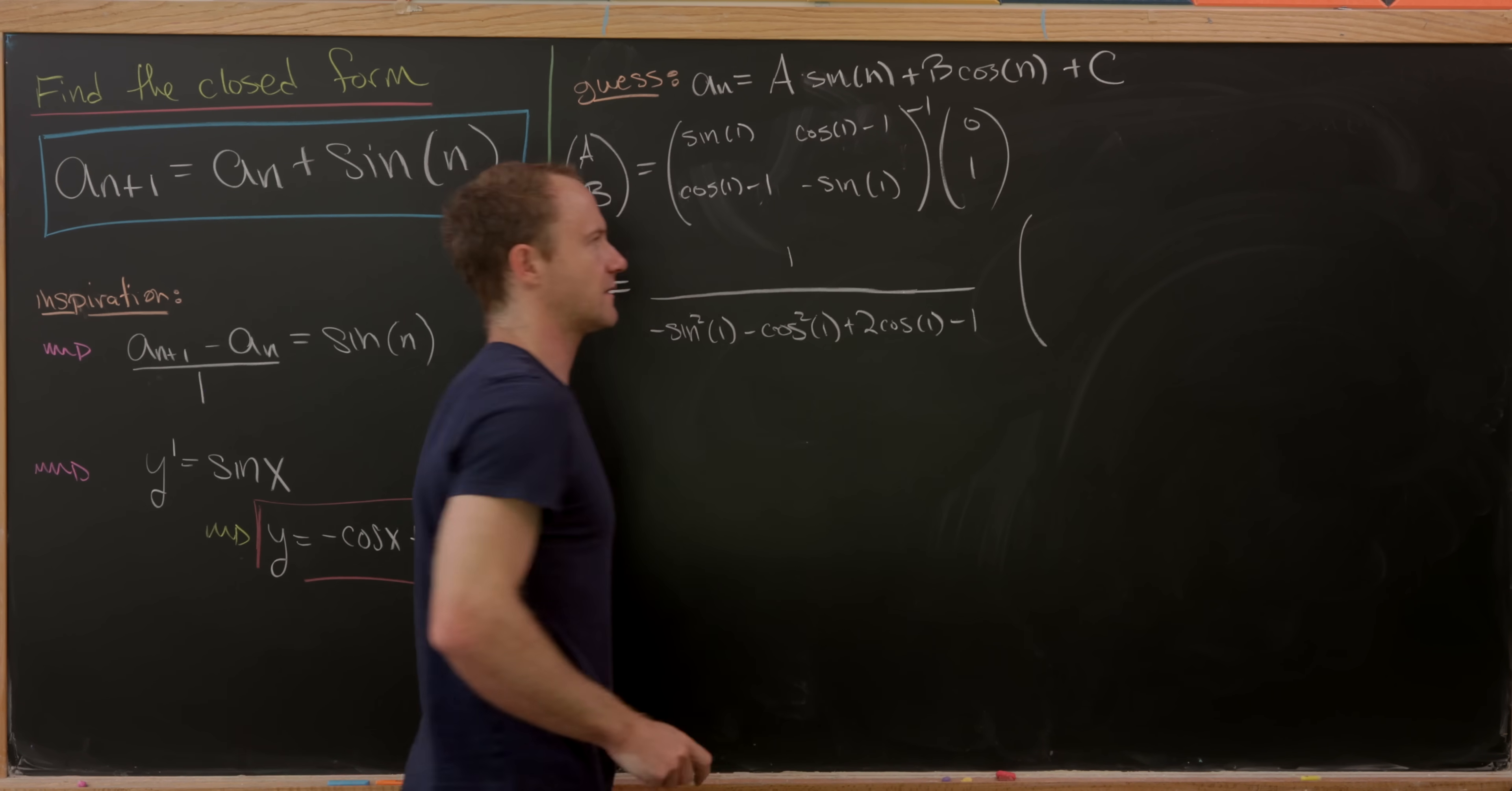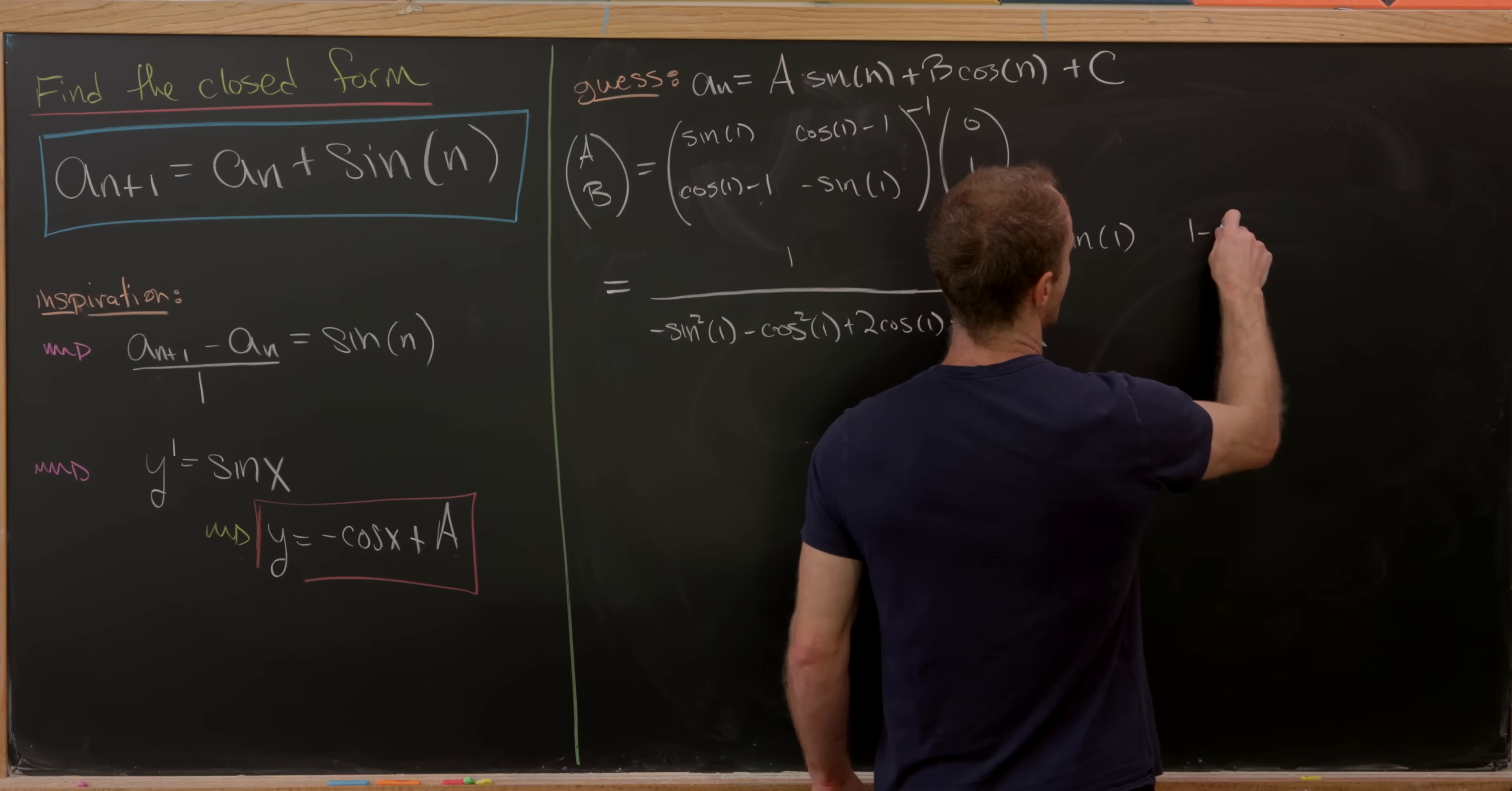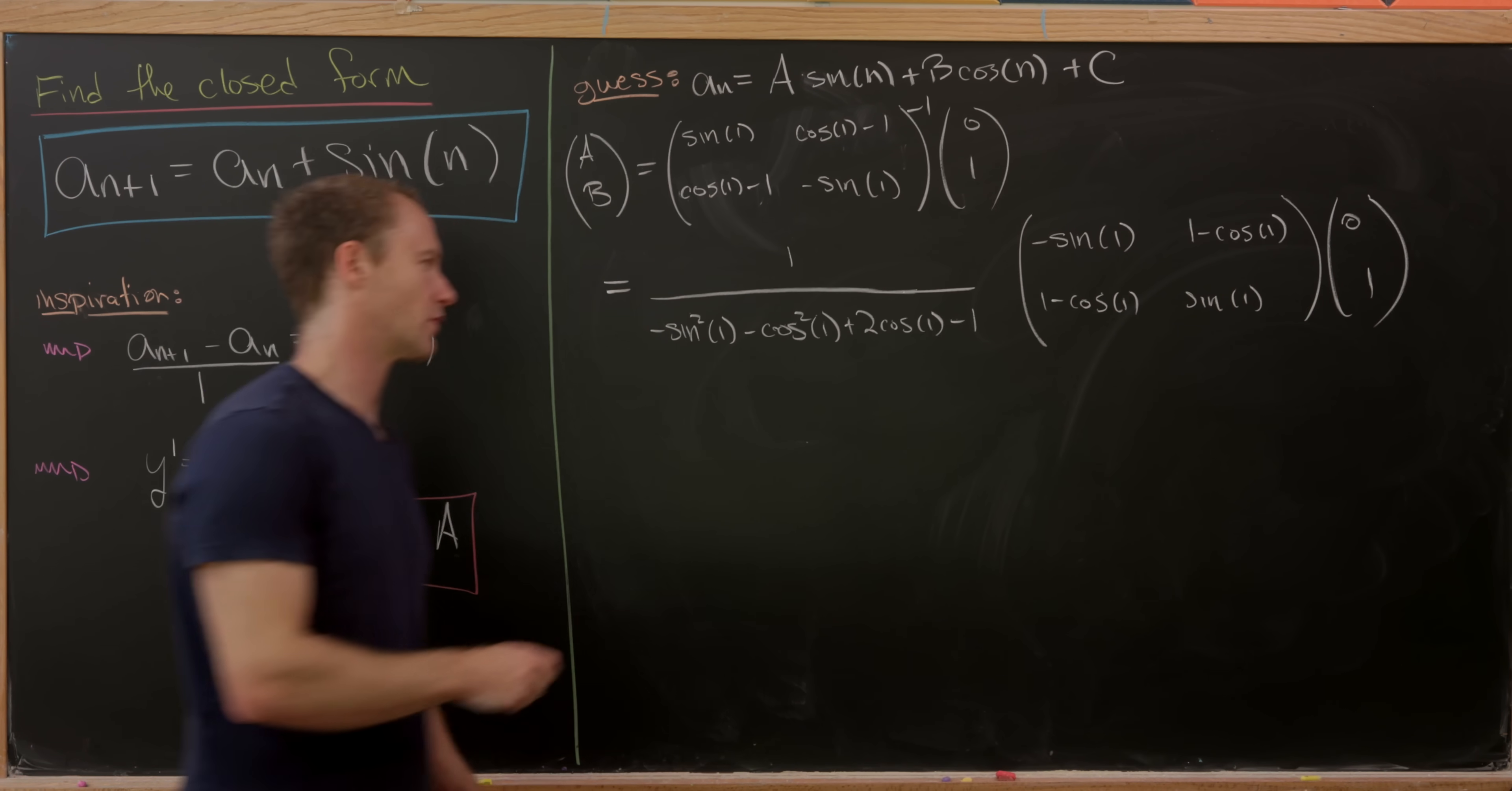And then how do we get the rest of it? We build the matrix by swapping the diagonals and negating the off diagonal. So that'll be minus sine of 1 here, 1 minus cosine of 1 here and here, and a positive sine of 1 here. And that's multiplying into the vector 0, 1.